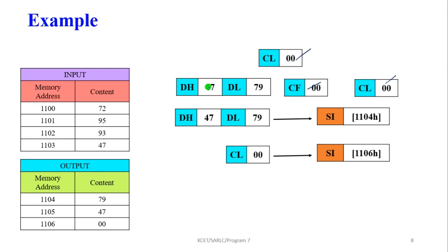The DX register now holds the result: DH = 47 (high byte) and DL = 79 (low byte). The difference values are moved to memory: 79 is stored at address 1104, 47 is stored at 1105, and the final borrow value from CL is stored at 1106. This completes the BCD subtraction example.